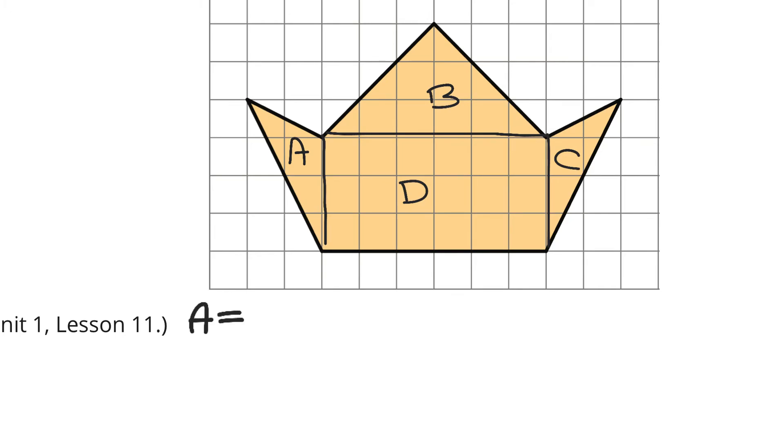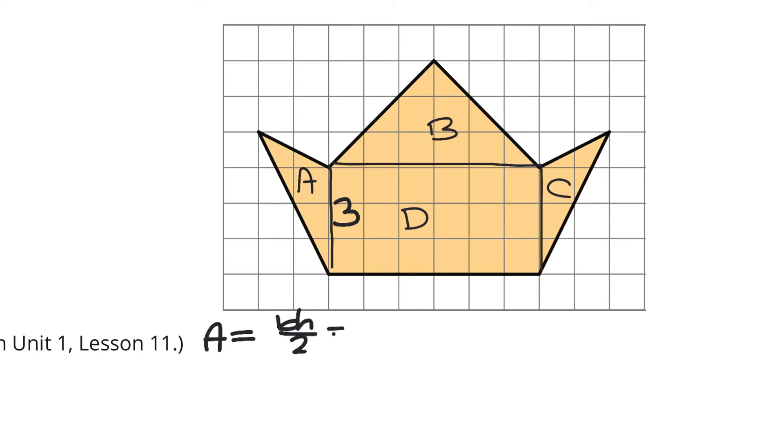So, focus on A first. It's a triangle. Base times height divided by two, or times one-half. Our base here is three. We can count that on the grid. And then, if we bring down kind of a parallel side to that vertex, that has a height of two. So, three times two, and divided by two is six divided by two, which is three.